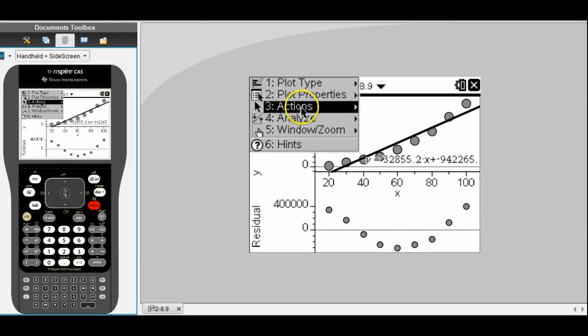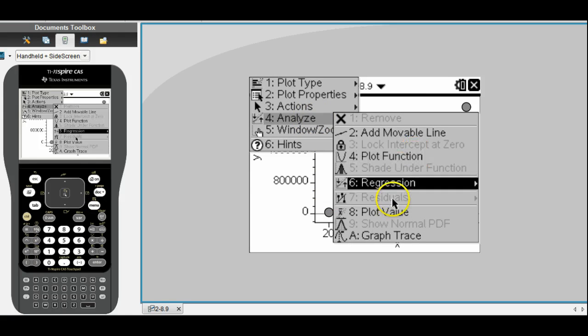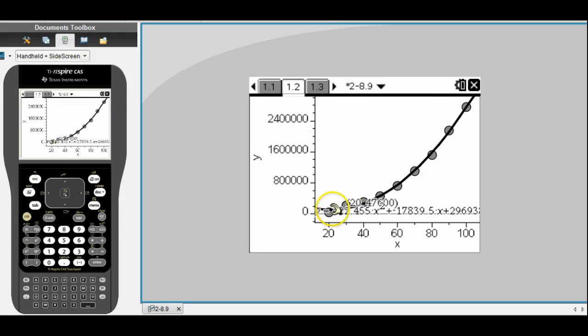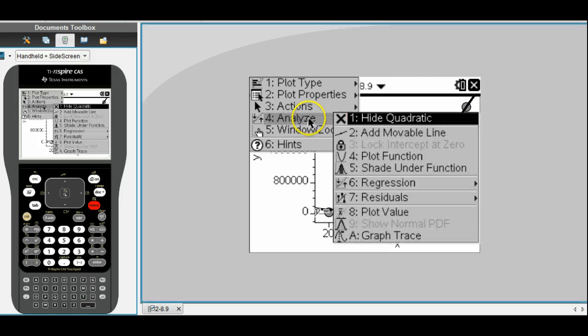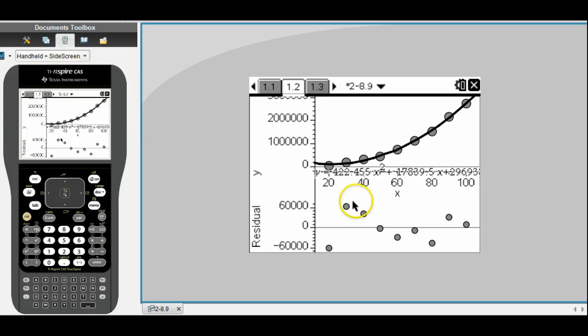Once you have that written down, we need it to be compared to other information. So we're going to hide the linear information, and we're going to move on to quadratic. To hide it, go menu actions, hide linear. We're back to where we started from. Now we're going to do menu analyze regression, and we're going to choose quadratic this time. Write down the quadratic model or the quadratic equation. Let's take a look at the picture. It definitely looks like the quadratic might be a good choice. To make sure, we're going to write down the residual plot by doing menu analyze residuals.